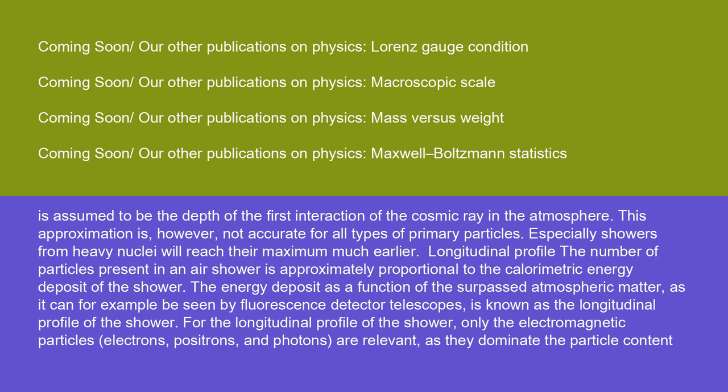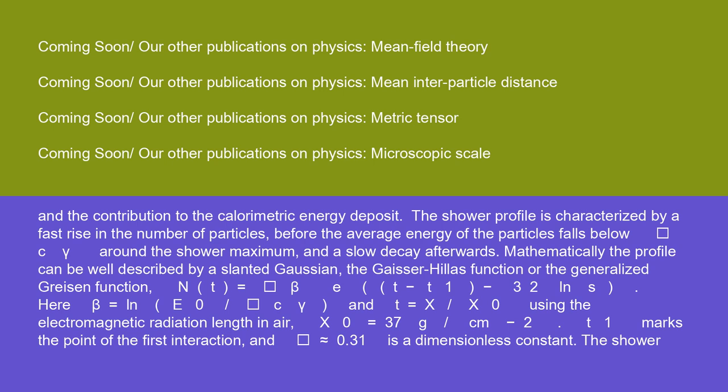This approximation is, however, not accurate for all types of primary particles. Especially showers from heavy nuclei will reach their maximum much earlier. Longitudinal profile. The number of particles present in an air shower is approximately proportional to the calorimetric energy deposit of the shower. The energy deposit as a function of the surpassed atmospheric matter, as it can, for example, be seen by fluorescence detector telescopes, is known as the longitudinal profile of the shower. For the longitudinal profile of the shower, only the electromagnetic particles, electrons, positrons, and photons, are relevant as they dominate the particle content. In the contribution to the calorimetric energy deposit, the shower profile is characterized by a fast rise in the number of particles before the average energy of the particles falls below epsilon_C_gamma around the shower maximum and a slow decay afterwards.